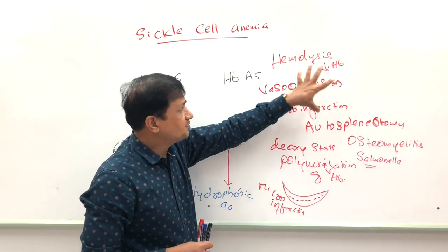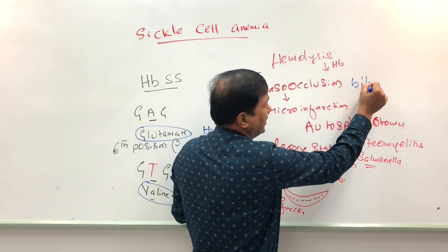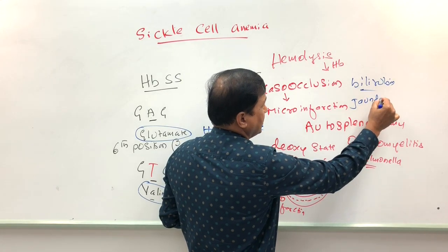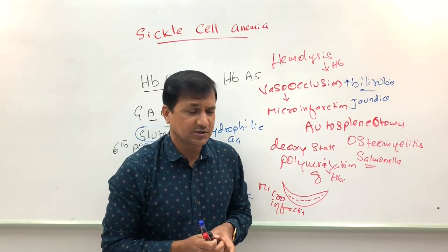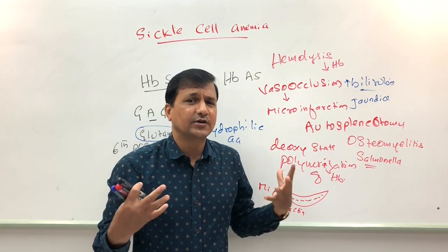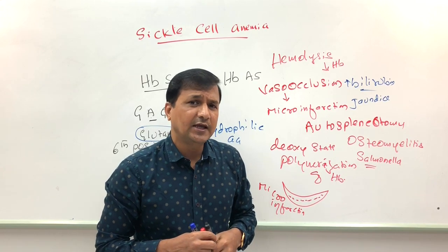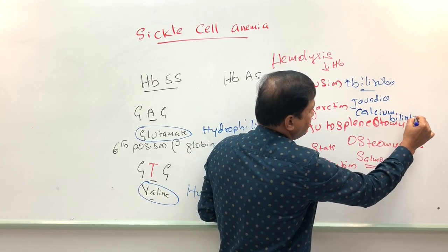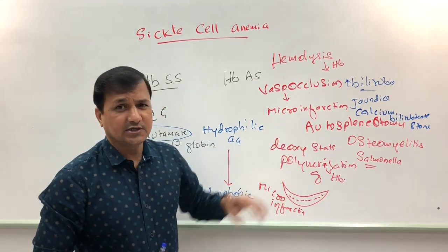Sickle cell anemia gets its name from both the sickle-shaped red blood cells and the decreased hemoglobin. Because hemoglobin is continuously converted into bilirubin, bilirubin levels increase, causing jaundice. The excess bilirubin can also accumulate in the gallbladder and precipitate with minerals like calcium phosphate, forming calcium bilirubinate stones — which are common in sickle cell anemia and in any hemolytic anemia.